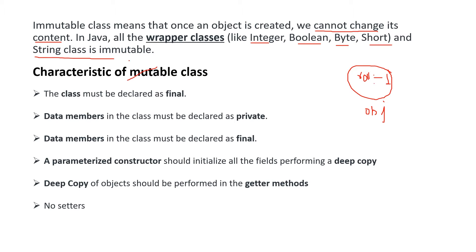Now, what are the characteristics of an immutable class? The first characteristic is that the class should be declared as final, so that no other class can extend it — if it is final, no child class can extend it. The second characteristic is that all data members in the class must be declared as private, so no object can access them directly and change their value. The third characteristic is that data members must also be declared as final, so once a value is set it cannot be changed.